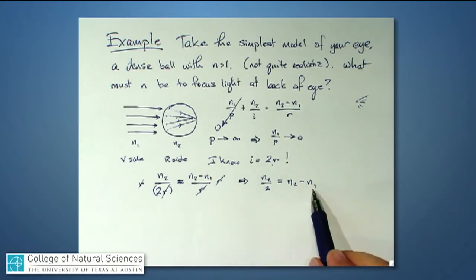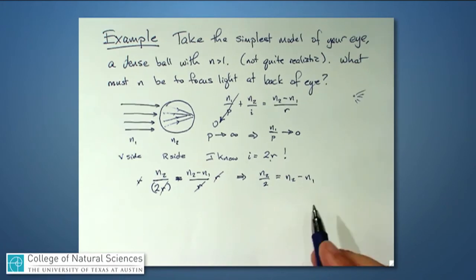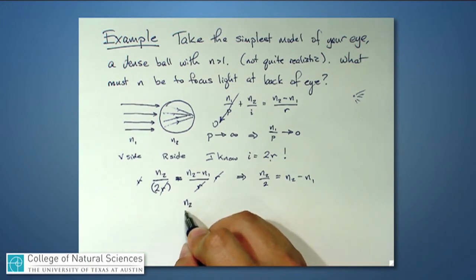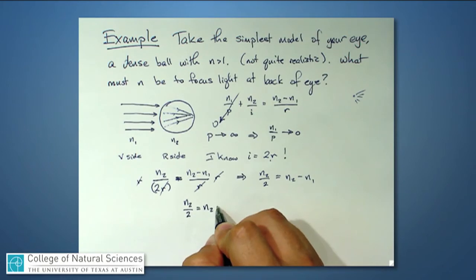I know what N1 is. N1 is the index of refraction of air. So I have N2 over 2 equals N2 minus 1.